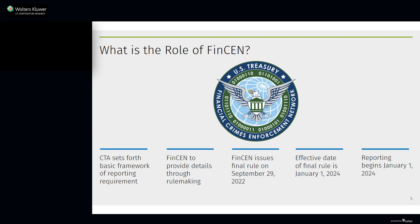What is the role of FinCEN? When Congress passes a law, the statute provides a basic framework, and Congress directs a federal agency to provide all the material details through its rulemaking. In the case of the CTA, that agency is FinCEN, which is part of the Department of Treasury. Congress directs FinCEN to issue a final rule implementing the reporting requirement, and the CTA says that reporting will begin on the effective date of that final rule. FinCEN issued the final rule on September 29, 2022, and that final rule has an effective date of January 1, 2024, meaning that the reporting requirement goes into effect on January 1, 2024.